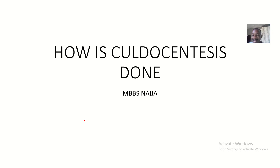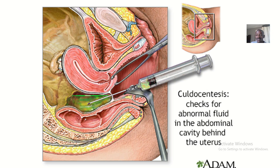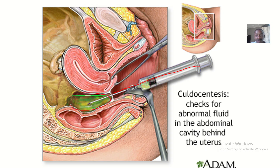In this video, we'll be answering the big question: how is kudosynthesis done? We've spoken about kudosynthesis before — it's a medical procedure that essentially checks for abnormal fluid behind the uterus. You basically put an injection behind the uterus and try to drain this fluid out. This fluid could be caused by ectopic pregnancy, pelvic inflammation, or many other things that make fluid accumulate in the empty space found behind the uterus. You use the kudosynthesis medical procedure to basically drain out this fluid.